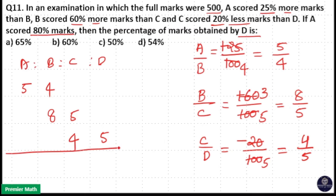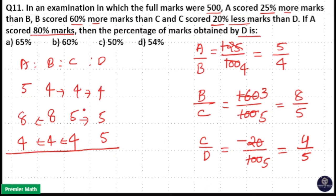Now combining the ratios: 4 comes here, 4 comes here, 8 comes here, 5 comes here, 4 comes here. So that is 5 into 8 equals 40, and 40 into 4 equals 160. So A scored 160 units. The question says A scored 80% marks, so 160 is equal to 80 percentage.